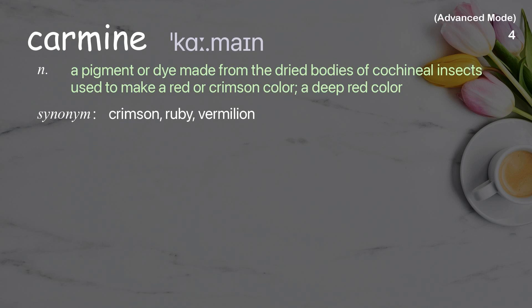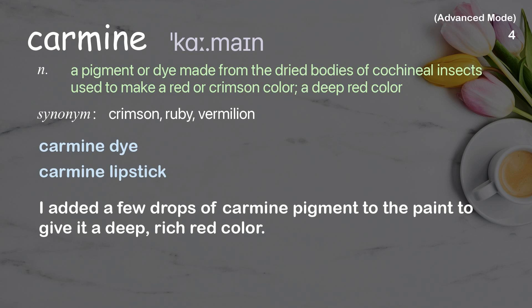Carmine: a pigment or dye made from the dried bodies of cochineal insects, used to make a red or crimson color; a deep red color.